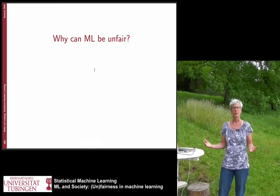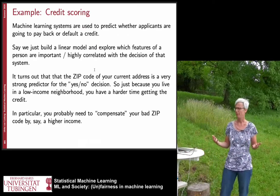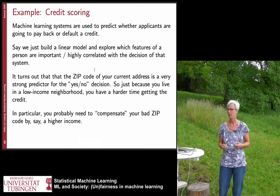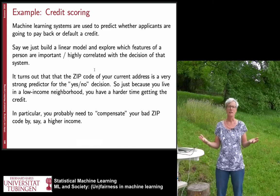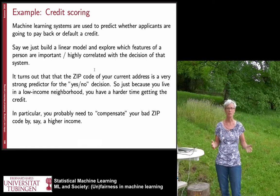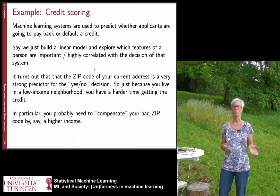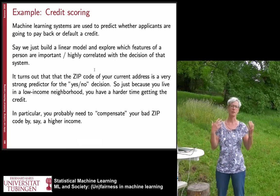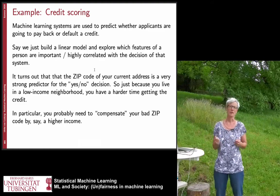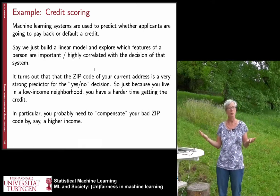Let us start with why machine learning can be unfair, beginning with the case of credit scoring. Machine learning systems are supposed to predict whether a person is going to get credit when applying at a bank. We build a linear model describing the person by features: income, age, education, address, number of children, and so on. We train a linear model on past data to predict whether a person will pay back the credit. What turns out is that the zip code is pretty highly correlated with whether the person is going to pay back the credit — it is a strong predictor.